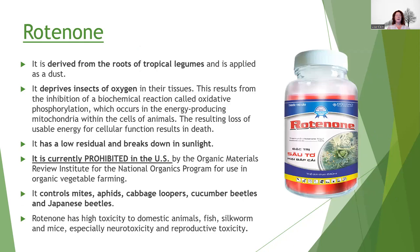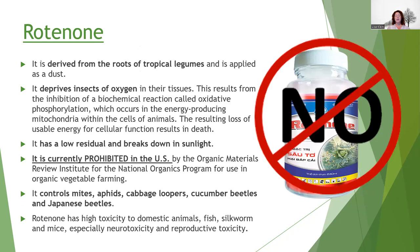Rotenone — I mentioned this one before. As a former fisheries biologist, we used this when doing fish surveys because it kills fish very effectively. This is not allowed under the USDA organics program. You can purchase it — it is available — but I do not recommend it. It is sold as a miticide for cats and dogs, so some people might source it that way. But it is highly toxic to domestic animals, specifically fish. If it gets into the water system, it will kill fish. You probably just want to cross this one off and not use it.